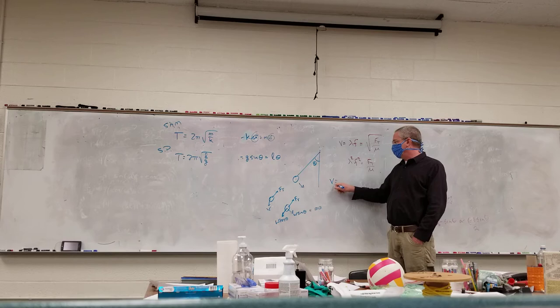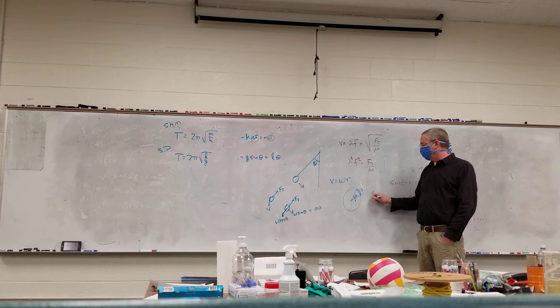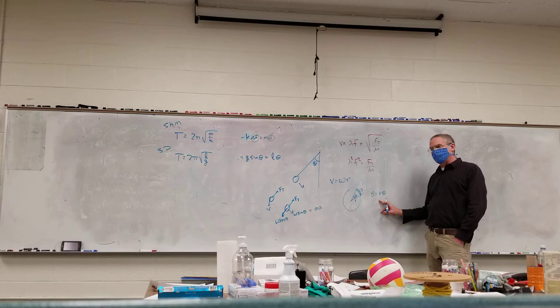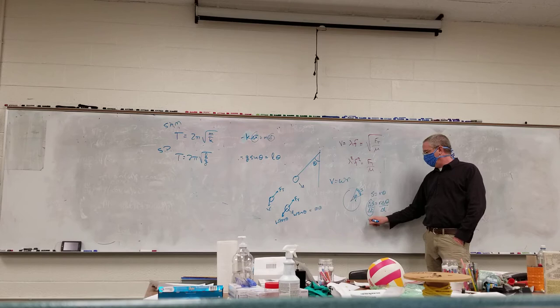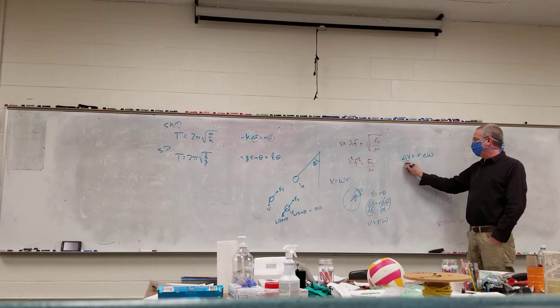I know that speed equals angular speed times radius. Going back one step: if I have a circle, the arc length s is related to the angle and the radius through s = r·θ. Taking the change with respect to time, the change in arc length equals r times the change in theta divided by time — that's the speed — equal to r times the angular speed. And the change in speed equals r times change in angular speed divided by time, giving us acceleration = r·α.